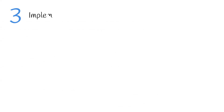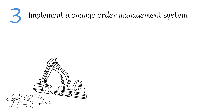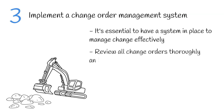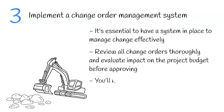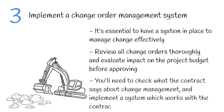The third tip is to implement a change order management system. Change orders can significantly impact the project budget and it's essential to have a system in place to manage them effectively. Make sure to review all change orders thoroughly and evaluate their impact on the project budget before approving them. You'll need to check what the contract says about change management and implement a system which works with the contract that your project is working on.